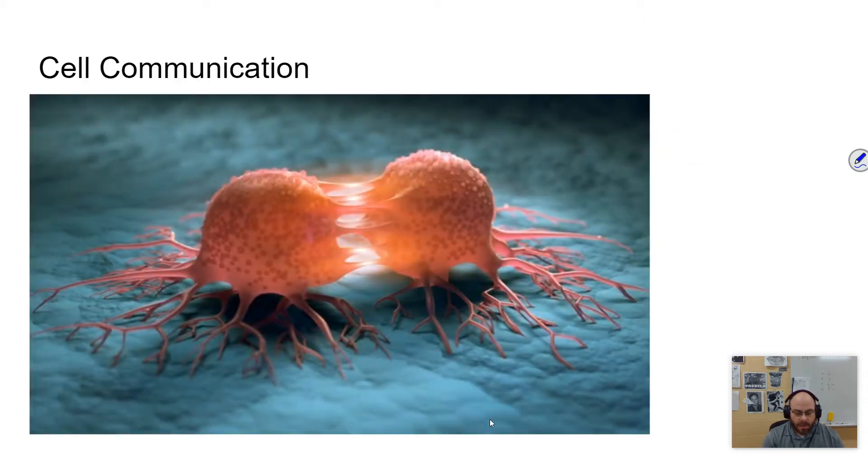And so cell communication, again, very simple concept, cells speaking to each other through chemical means, typically. This can be directly, this can be over a short distance, like a regional sort of thing, or it can be over long distances. And again, you normally think of this in the context of a multicellular organism.